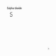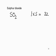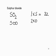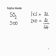Sulfur dioxide, SO₂: one sulfur contributing 32, and two oxygens each at 16 giving 32. Total RMM of sulfur dioxide: 64.